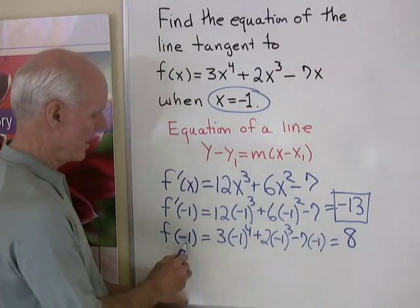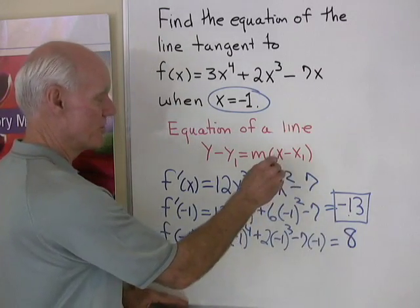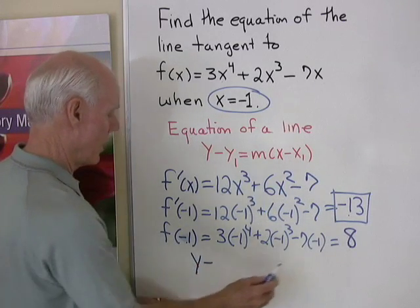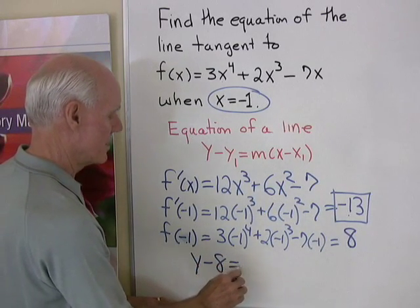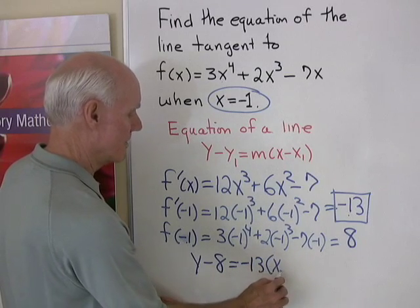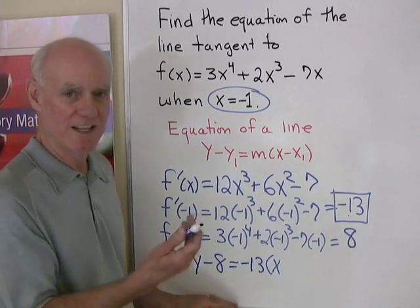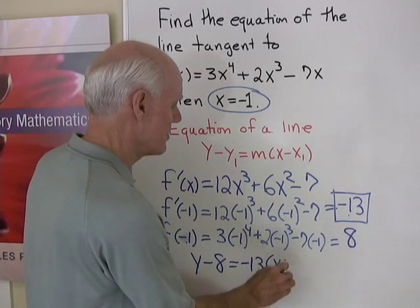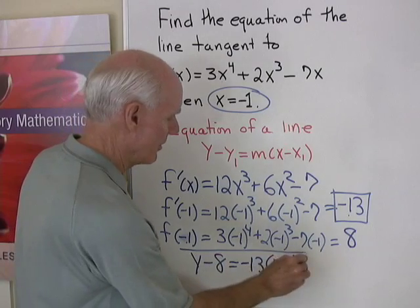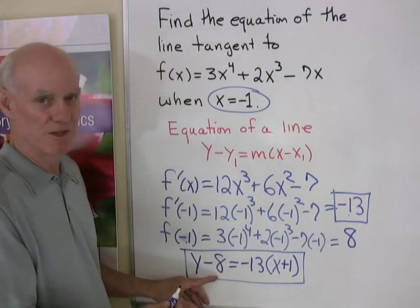So there's my x1, y1, and M. I'll put those back into the point-slope form to get y. Subtract y1, which is 8, is equal to M, negative 13, times x subtract x1. Well, x subtract a negative 1 is going to be x plus 1. So there's the equation of the line in point-slope form.